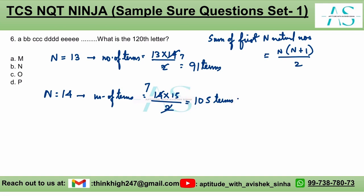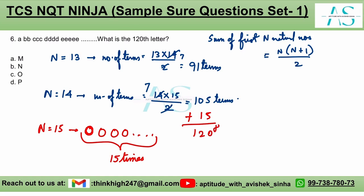Now from the 106th term onwards we are starting with n equals 15, and n equals 15 is simply O. Now O will be contained how many times? O will be contained 15 times. So if we add 15 to this it would be 120.